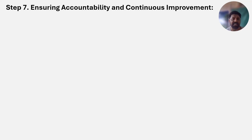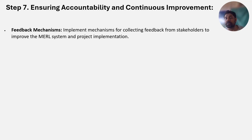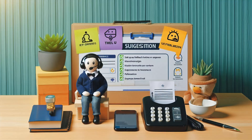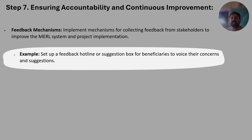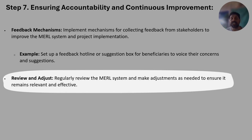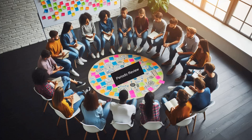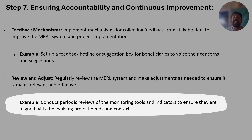Step seven — a cross-cutting step — is to ensure accountability and continuous improvement. Implement feedback mechanisms to collect input from stakeholders. For example, in the health sector, create a feedback mechanism for health workers to suggest improvements for vaccination campaigns. Regularly review the system and make adjustments as needed, conducting periodic reviews of monitoring tools and indicators to ensure they remain aligned with project needs and context.